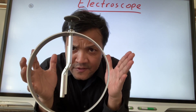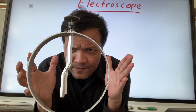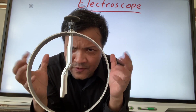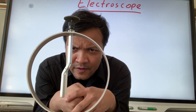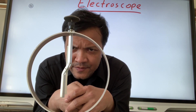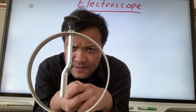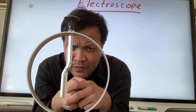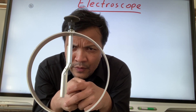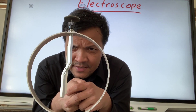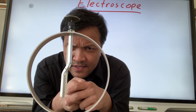What is static electricity? Static electricity is an imbalance of electric charge on the surface of an insulator. So I need an insulator.